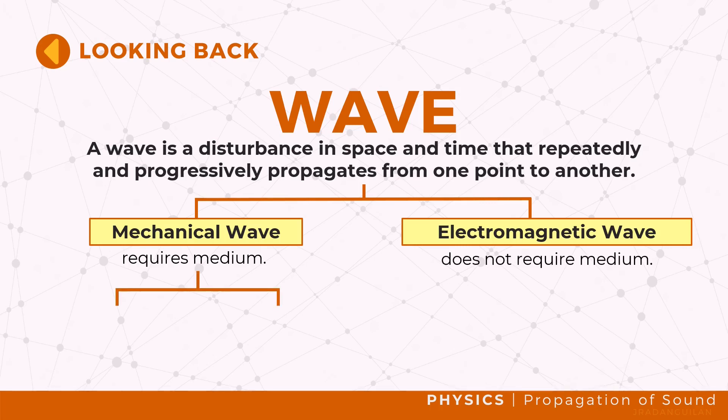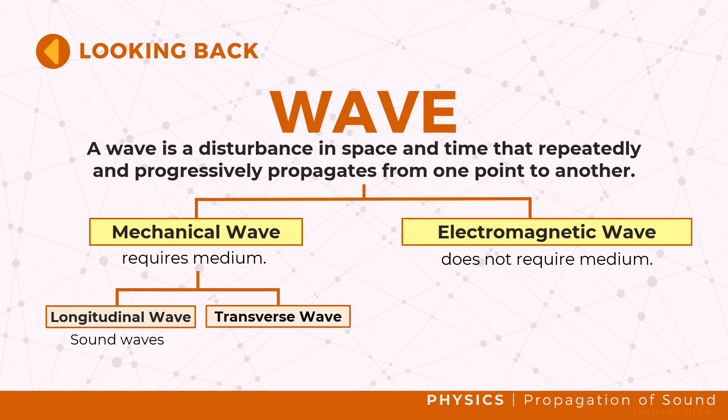There are two types of mechanical waves. Longitudinal waves, where the movement of the particles are parallel to the motion of the energy — one example of this is sound waves. When the movement of particles is at a right angle or perpendicular to the motion of energy, then this type of wave is known as a transverse wave.